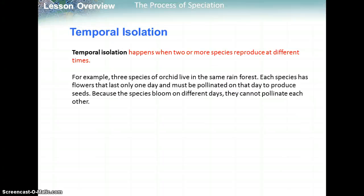Temporal isolation happens when two or more species reproduce at different times — 'temporal' relates to tiempo, meaning time. For example, three species of orchid live in the same rainforest and each species has flowers that last only one day and must be pollinated on that day to produce seeds. Because the species bloom on different days, they cannot pollinate each other, so they are different species because they have different times of reproduction.